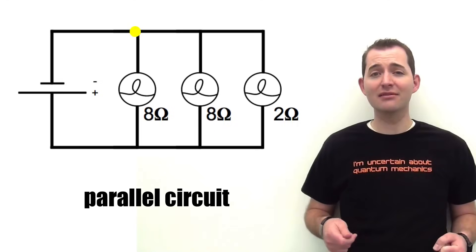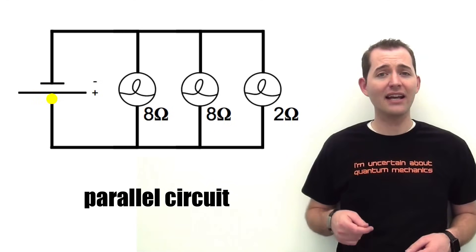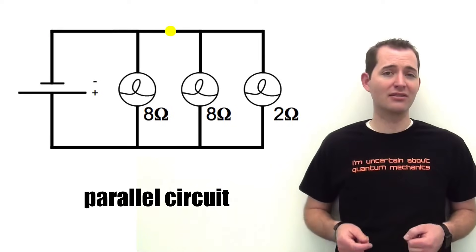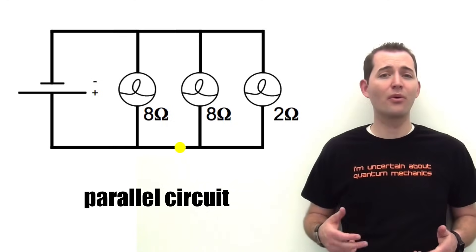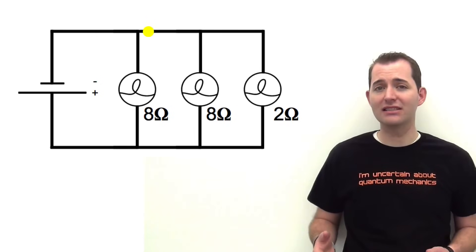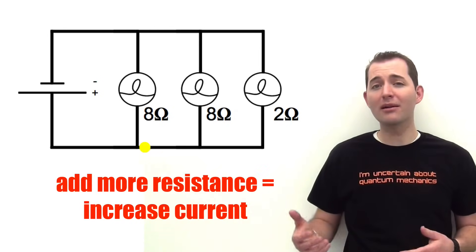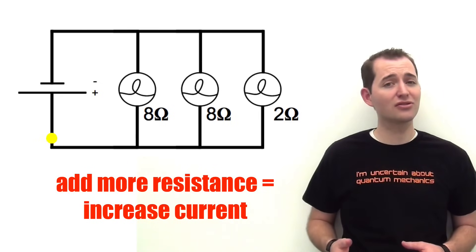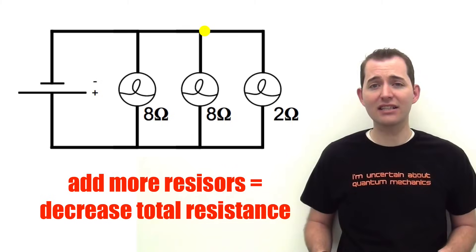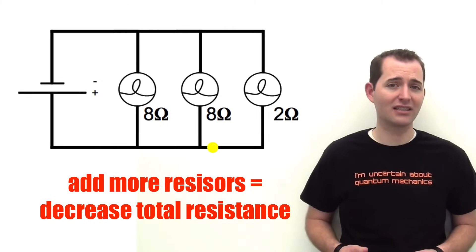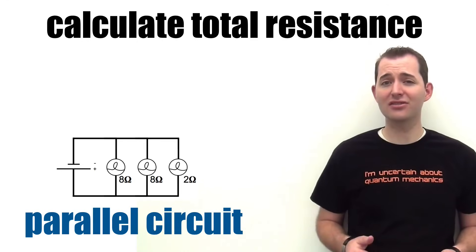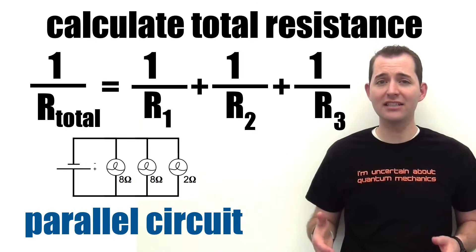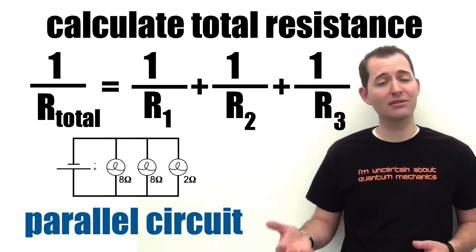Let's now look at the resistance in a parallel circuit. If we follow that single charge as it moves around our parallel circuit, we can see that it has multiple paths it can take, and each single charge will only pass through one bulb on its way around the path. Parallel circuits have an unexpected feature: as we add more and more resistors in parallel, we actually increase the overall current in that circuit. Because of Ohm's law, as we add more resistors we're actually decreasing the total resistance for that circuit.